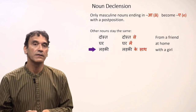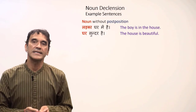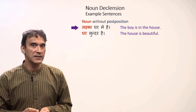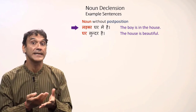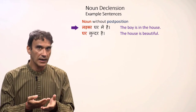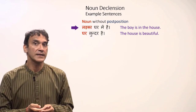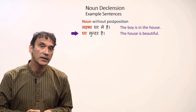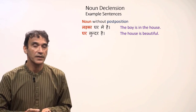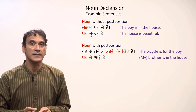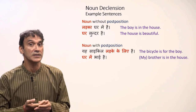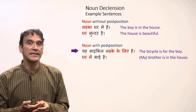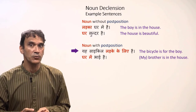Let's take some example sentences. In the first two sentences, the noun does not come with a postposition, so it stays in its dictionary form. 'Ladka ghar mein hai' — the boy is in the house; 'ladka' stays the same. 'Ghar sundar hai' — the house is beautiful. In the next sentences, the noun comes with a postposition, so a masculine noun ending in 'a' changes to 'e.' 'Yeh cycle ladke ke liye hai' — the bicycle is for the boy; 'ladka' becomes 'ladke.'